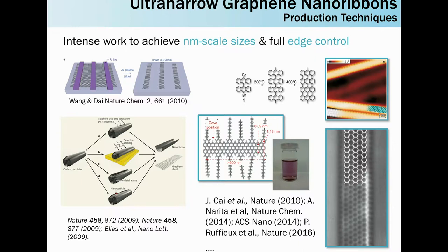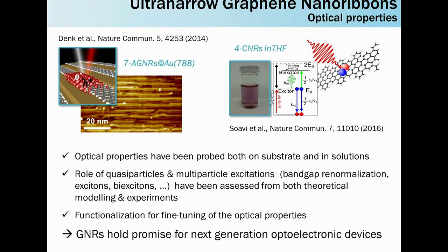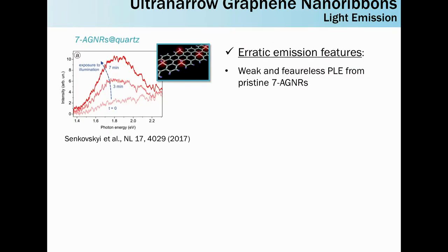Starting from that, in the direction of optoelectronic devices, they started to characterize the optical properties of these systems in different manners. The properties were probed both on substrate and in solution. One of the main achievements was to assess the role of quasiparticle and multiparticle excitation in this type of system, which are expected to be large due to quantum confinement. This was assessed combining both theoretical modeling and experiments. All of this was done regarding optical absorption. But if you want to go in the direction of devices, one of the most important features is also emission.